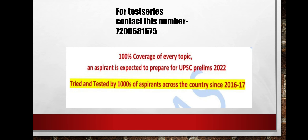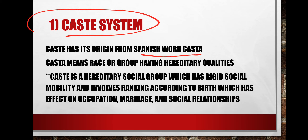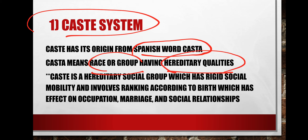Now let's start the lecture. The first feature we are going to learn today is the caste system. The word 'caste' is derived from the Spanish word 'casta', which means a race or group having hereditary qualities — qualities acquired from birth itself. So the caste system is related to birth.